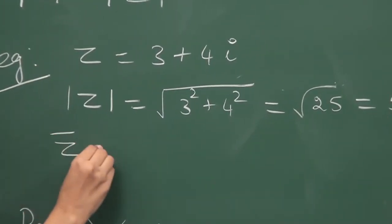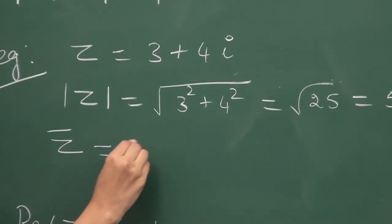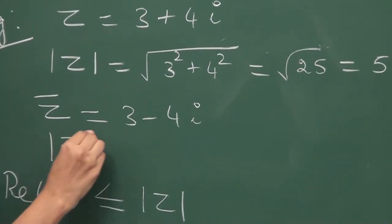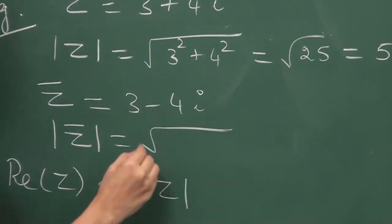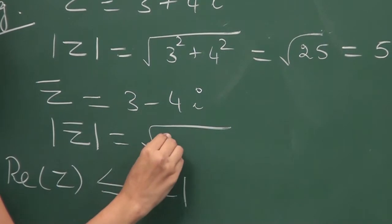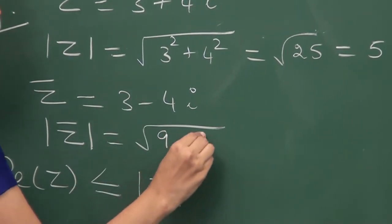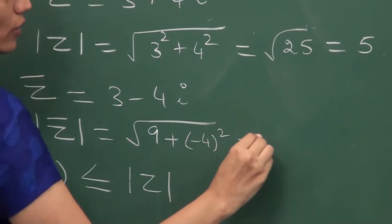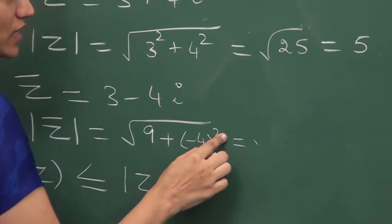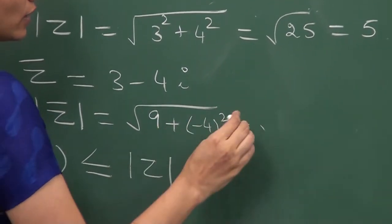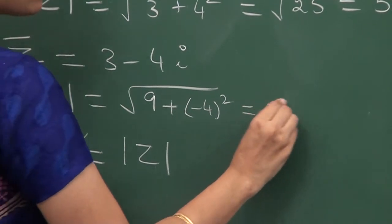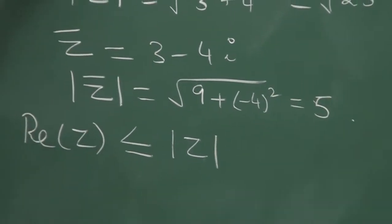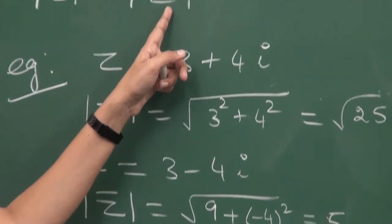Now let us consider z-bar equals 3 minus 4i. The modulus of z-bar is again the square root of the square of the real part plus the square of the imaginary part. That is minus 4 the whole square, which is 16. So 16 plus 9 equals 25. Again we get the same modulus. So modulus of z is equal to modulus of z-bar — the modulus of a complex number and its conjugate are both equal.